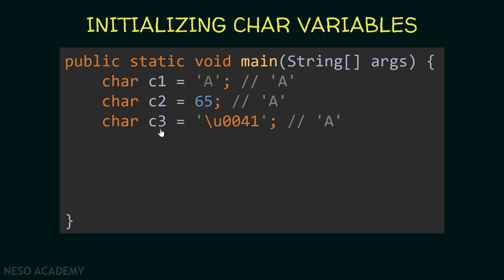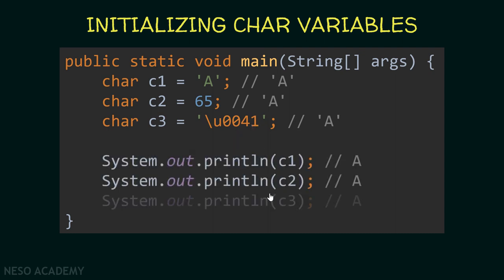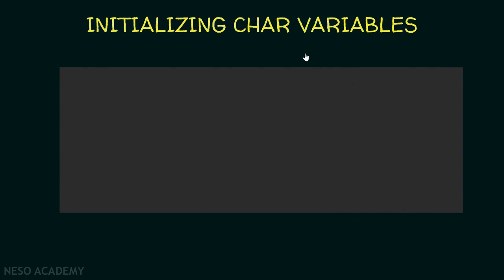Finally, c3 is assigned the Unicode character '\u0041' inside single quotes. Java uses the Unicode encoding scheme to determine what this character is — and it is also A. So all three variables contain the same value: the character A. c1 uses the character itself in single quotes, c2 uses the integer representation, and c3 uses the Unicode representation. If we print c1, c2, and c3, in all cases we will see A printed.